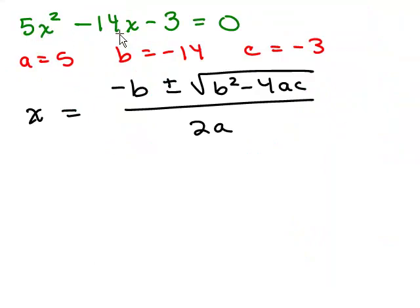After we set the problem equal to 0, we identify what a, b, and c are equal to. In the formula we're just going to plug in those numbers. So I'm going to plug in the a's, b's, and c's. I've got negative b, so I could write negative, and then for b you could plug in negative 14.